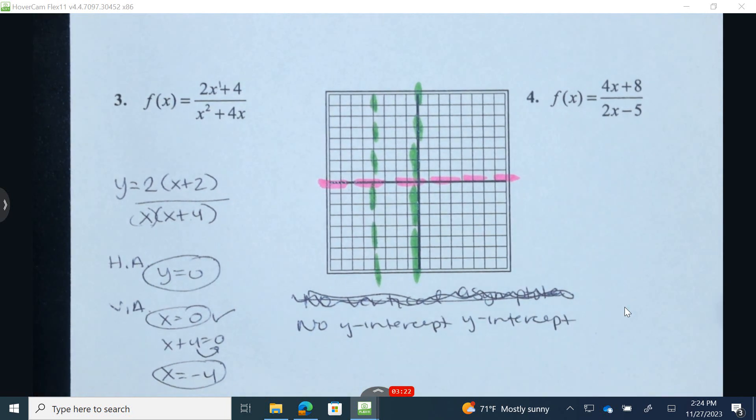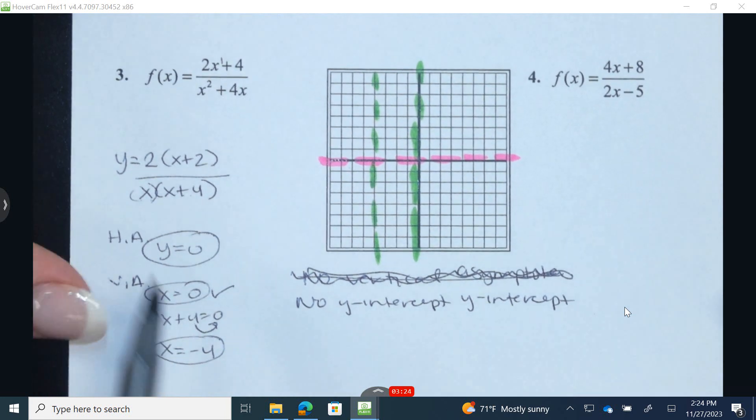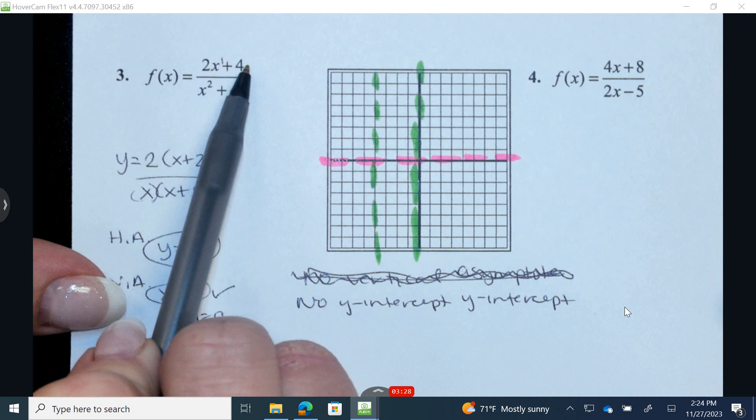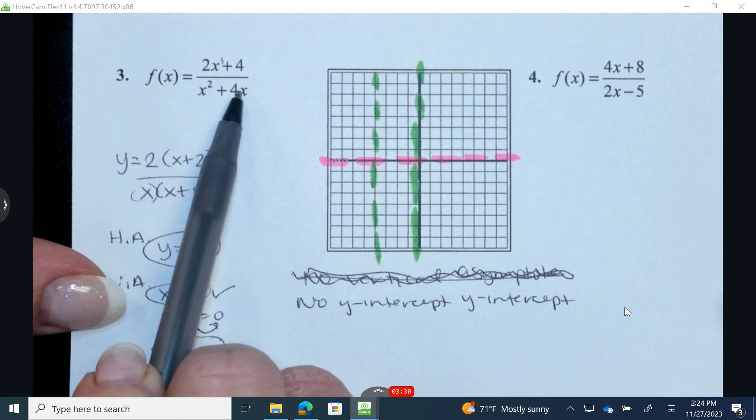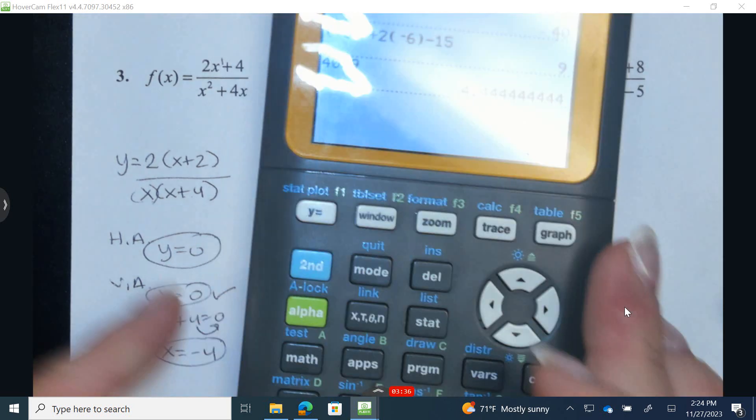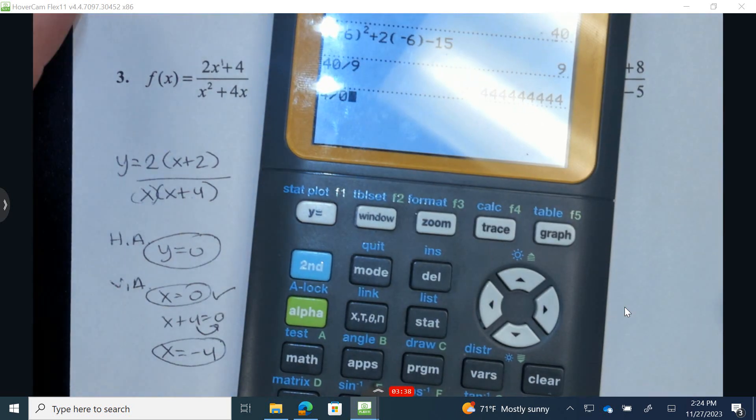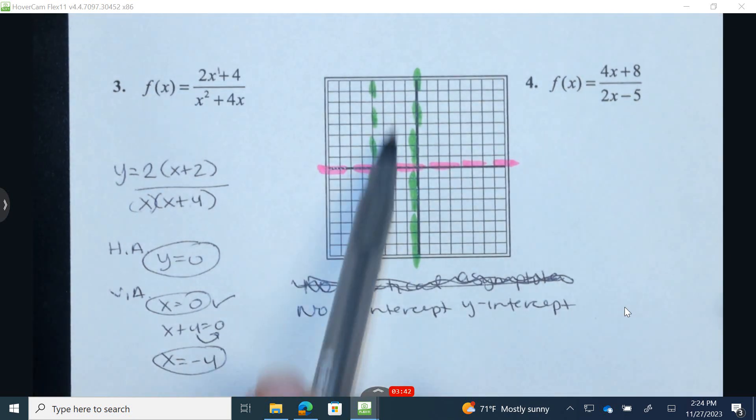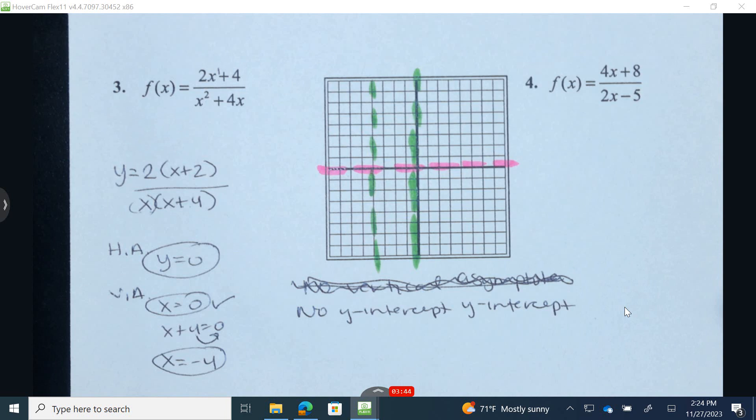Now, if you forgot that fact or did not realize that, you can go ahead and plug in 0 for x's. You'd have 2 times 0 is 0, plus 4 is 4. You'd have 4 over 0. We know 4 over 0 would not be able to create a real number. In fact, if you plugged in your calculator, it would say error. You can see that, right? You can never have 0 on the bottom. So that would also give you a clue as to why we have no y-intercept.